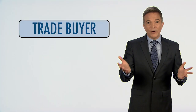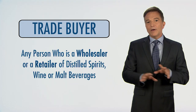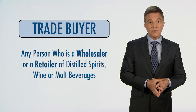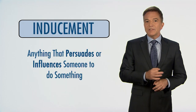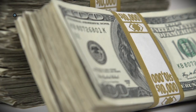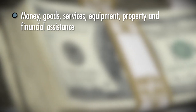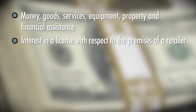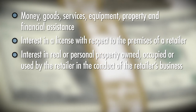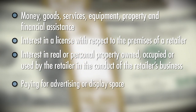You'll hear the term trade buyer used during our presentations on commercial bribery and consignment sales. A trade buyer is any person who is a wholesaler or retailer of distilled spirits, wine, or malt beverages. An inducement is anything that persuades or influences someone to do something. Inducements may include money, goods, services, equipment, property, financial assistance, or the like, an interest in a license with respect to the premises of a retailer, interest in real or personal property owned, occupied, or used by the retailer in the conduct of a retailer's business, or paying for advertising or display space.